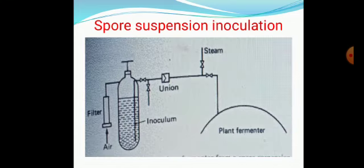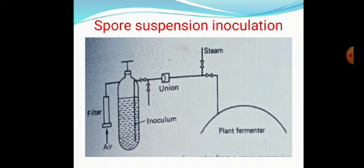Your inoculum may be a bacteria or a fungi. If it is bacteria, you follow the same method for fungi as well — the method is almost the same. To highlight that it is a fungi, this diagram is shown. Fungi has to be inoculated via spores; you cannot inoculate mycelia directly. So we take spores of the particular fungal culture, make a suspension, and that spore suspension is inoculated into the fermenter.